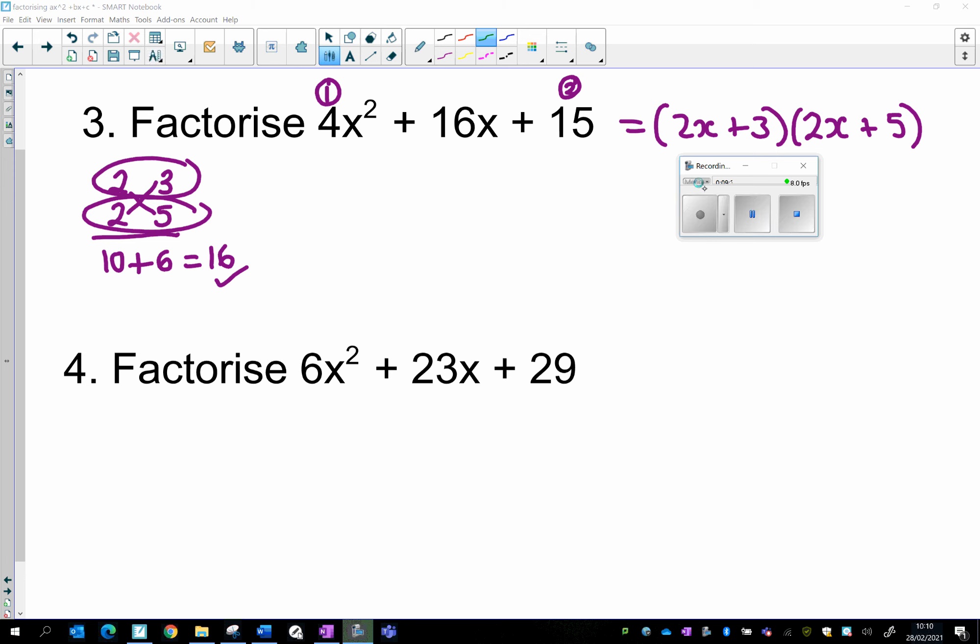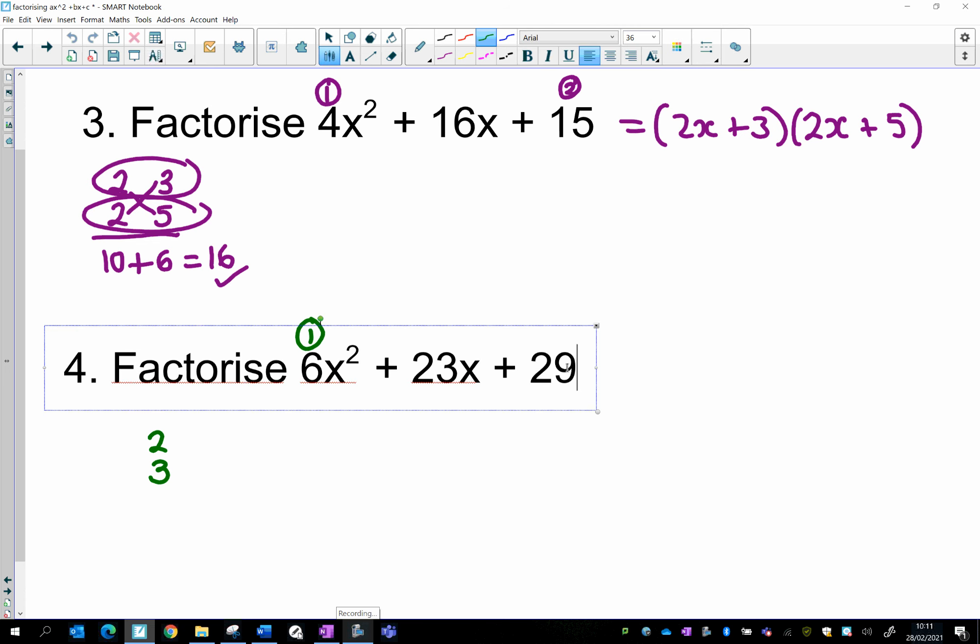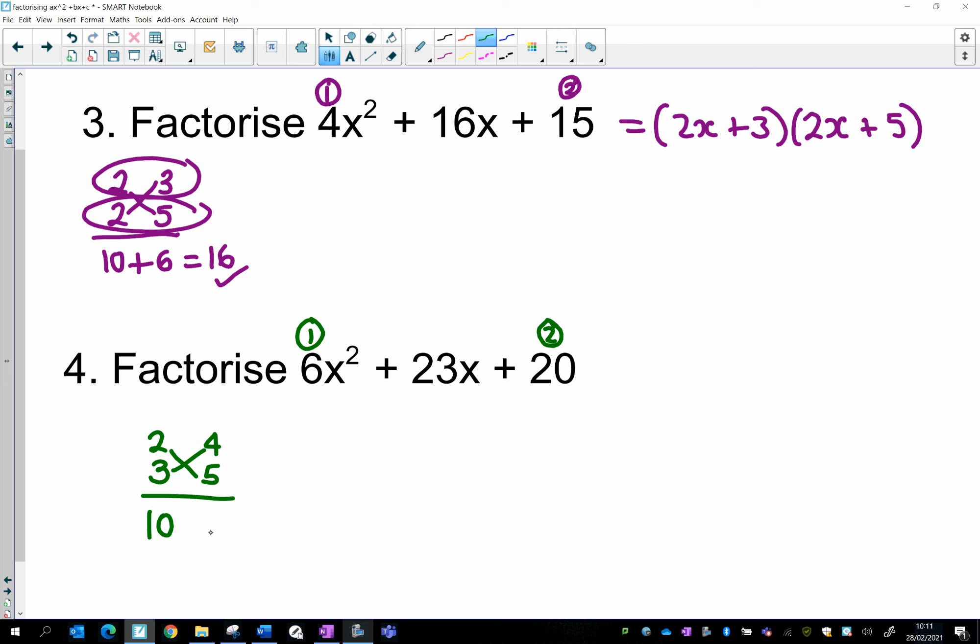Here's another one. 6x squared plus 23x plus 20. Start with the 6, as usual. Two numbers that times to make 6. Don't start with 6 and 1. Start with 2 and 3. So let's put 2 and then 3. That should be 20. Sorry, that should be a 0. I wanted to give you a harder one. So 20. Two numbers that times together to make 20. Let's say 4 and 5. So 4 times 5 is 20. Let's crisscross. 2 times 5 is 10. 3 times 4 is 12. It's close. 10 plus 12 is 22. But it's not 23. So it's wrong. It's got to be 23.